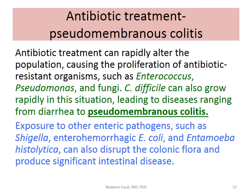We were on the slide about antibiotic treatment. If you use an antibiotic it can change the existing population of bacteria. You have a given set of bacteria in harmony with your immune system, and all of a sudden you change that equilibrium. What may happen is that you end up proliferating antibiotic-resistant organisms such as Enterococcus, Pseudomonas, and fungi. Clostridium difficile can also grow rapidly, leading to pseudomembranous colitis, which results in uncontrolled diarrhea. We then have to stop the antibiotic and treat the infection as well.